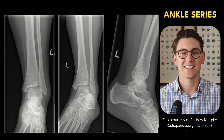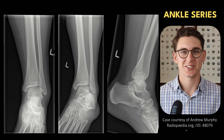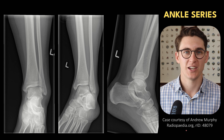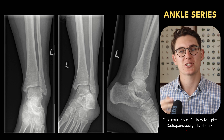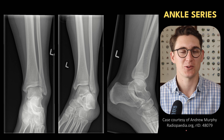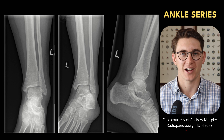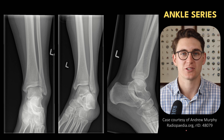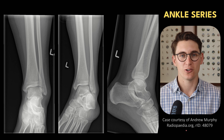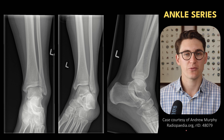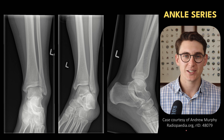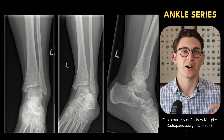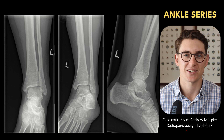Hello everybody and welcome back to another anatomy tutorial. Today we're going to be looking at the bones of the ankle joint as well as the bones of the foot. I'm going to use this talk as a stepping stone into our next talk where we're going to be looking at an ankle MRI and looking at the various different soft tissue structures that surround these bones. But for now let's start at the ankle, move our way to the foot, and then I'm going to show you some of the orientations and locations of important ligaments and tendons that we'll need to know about when heading into that MRI talk.